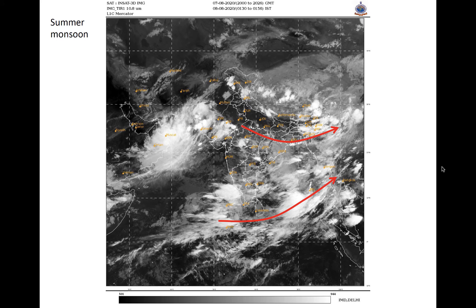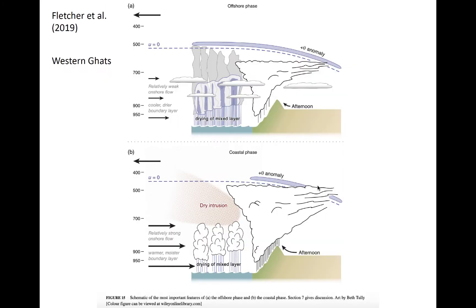An example of convection in the monsoon seen in visible imagery is shown here. Plenty of convection is active across South India and the Bay of Bengal, as well as Southeast Asia. The trajectory of the flow is also apparent in the cloud field, denoted by the red lines roughly. This is reminiscent of the previous schematic of low-level flow in the summer monsoon. Locally, convection may be modulated near small topographical features impinged upon by the mean westerly low-level flow.